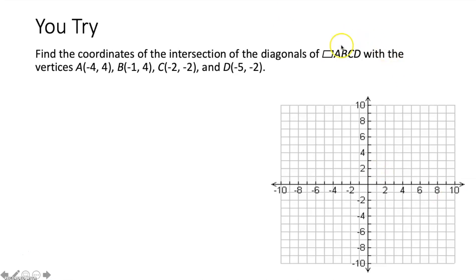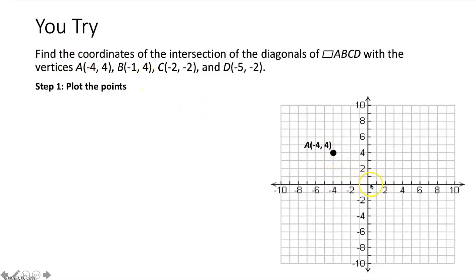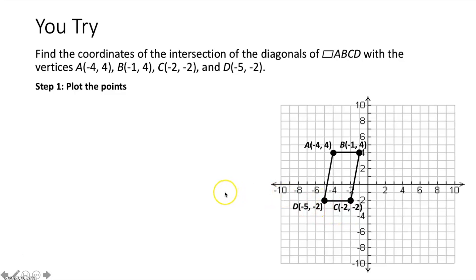Now we do the same thing for parallelogram ABCD with these given vertices. We plot each point: A is at (−4, 4), B is at (−1, 4), C is at (−2, −2), and D is at (−5, −2). There is our parallelogram ABCD.